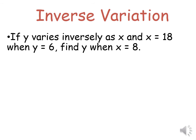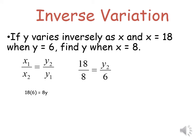If y varies inversely as x and x equals 18 when y equals 6, find y when x equals 8. Using the inverse proportion relation x1 over x2 equals y2 over y1: 18 over 8 equals y2 over 6. Cross multiplication gives 18 times 6 equals 8 times y2. So y equals 18 times 6 over 8, giving y equals 13.5.